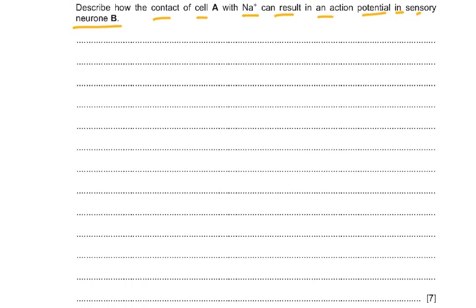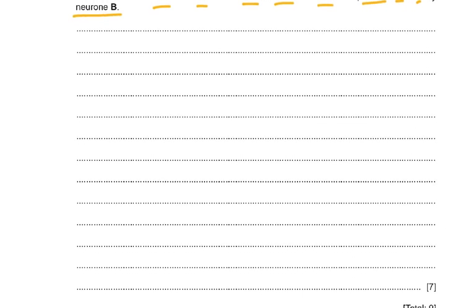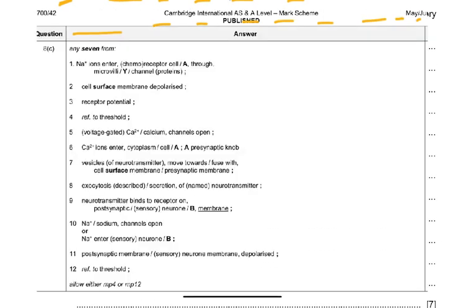This is a seven-mark question and it is very direct — either you know it or you don't. There's no real thinking involved; it's something we have to memorize and write down. To summarize: sodium ions enter through the microvilli channel proteins, the cell surface membrane is depolarized, a receptor potential is generated and the threshold crossed, calcium channels open, calcium ions enter, vesicles fuse with the membrane, exocytosis of neurotransmitter, neurotransmitter binds receptor on neuron B, sodium channels open, post-synaptic membrane depolarized, and threshold crossed.